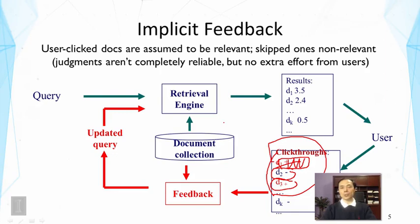To summarize, we talked about three kinds of feedback. First, relevance feedback, where the user makes explicit judgments — it takes some user effort, but the judgment information is reliable. Second, pseudo feedback, where we simply assume top-ranked documents are relevant, and we don't have to involve the user, so we can do this before returning results. Third, implicit feedback, where we use click-throughs — we involve users, but the user doesn't have to make an explicit effort to make judgments.